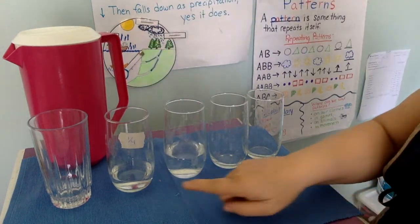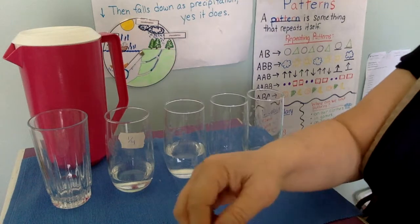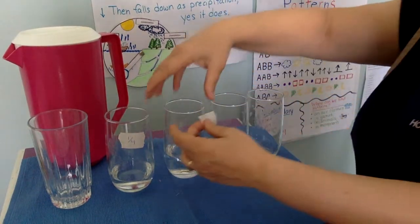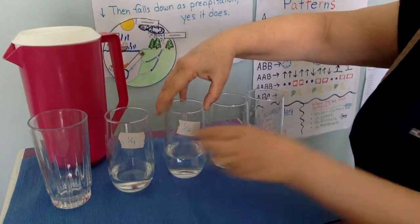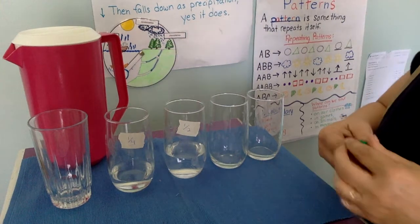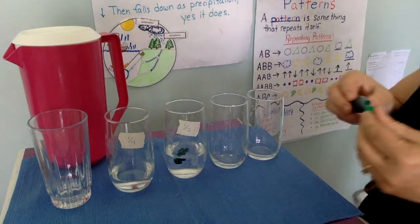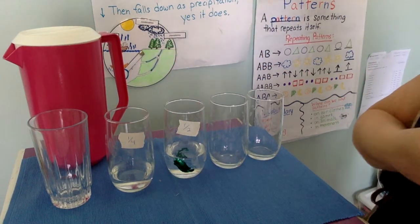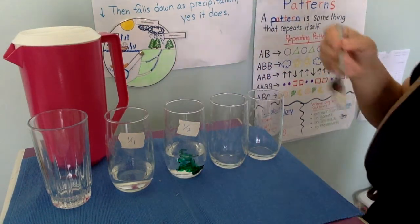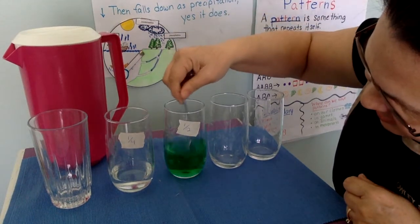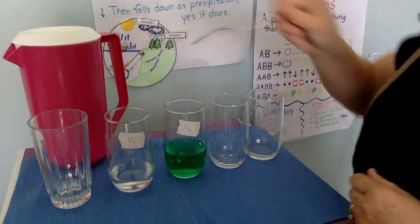And I'm going to pour that into the third glass. As you can see now, it's a little bit more. And you know what? In order to see it better, I'm going to add a tiny bit of green into this one. And look at that green color. And I'm going to stir it. Now you can see the difference.